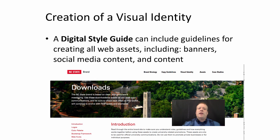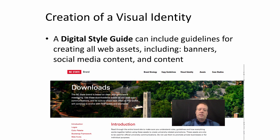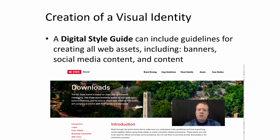The first thing you need to think about when creating your website or app is how to create a visual identity. The basic idea is that you want to put together a digital style guide that describes what all the different consistent aspects of your web presence are going to look like. Almost all companies or organizations over a certain size have such a digital style guide.